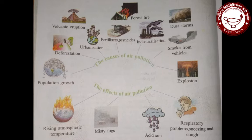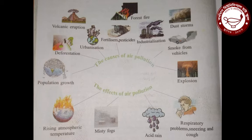Nitrogen oxide emitted from supersonic jets, nuclear explosions are also causing harm to the ozone layer. As the ozone layer gets thinner, ultraviolet rays are reaching the earth, resulting in increasing skin cancer and optical diseases. Agricultural production is also decreasing as chlorophyll in tree leaves is being damaged, and many plants and animals are facing extinction.